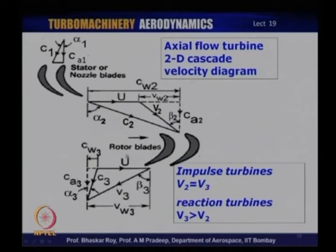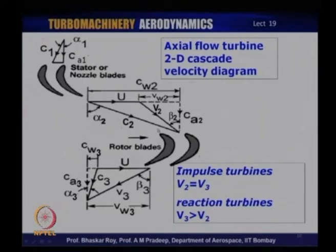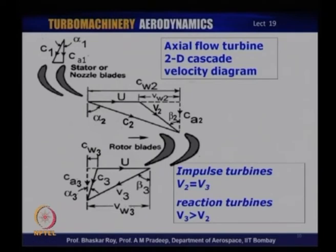These details of velocity triangles will be done in more detail starting with the next lecture. To define impulse and reaction: when the relative velocities V2 and V3 are equal to each other, we call it an impulse turbine. On the other hand, a reaction turbine has V3 clearly greater than V2. As we shall see later, the values of u, V2, V3, and C3 vary from root to tip of a turbine — those details will be covered in the following lectures.